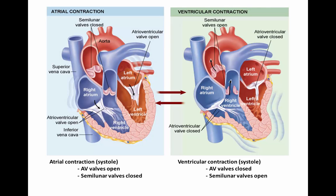Now let's look at preventing backflow of blood during the cardiac cycle. During atrial systole — the part of the cycle when the atria are contracting and the ventricles are relaxing — ventricles fill with blood from the atria. The AV valves, the tricuspid and the bicuspid, are open to allow blood flow from the atria into the ventricles. To prevent backflow from the pulmonary trunk and the aorta into the ventricles, the pulmonary and aortic semilunar valves must be closed.